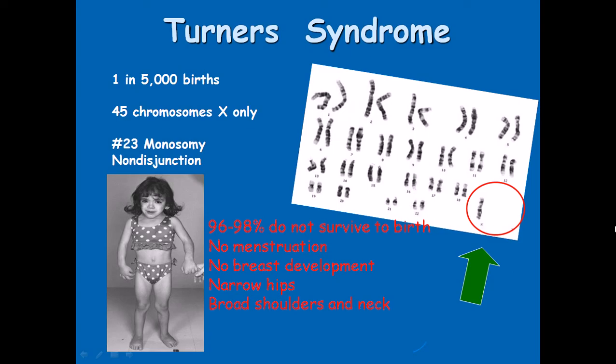Turner syndrome is a syndrome where the sex chromosome — X or XY — is affected. This problem is related to girls: it happens to be a girl, but one X is deleted. As a result, we call it monosomy, because we are having only one X chromosome instead of two. Mono means one, so monosomy is a result of non-disjunction during the segregation of sister chromatids during meiosis. This occurs in one in five thousand births.